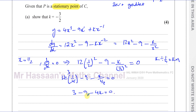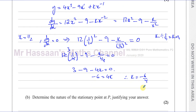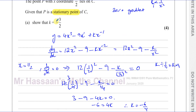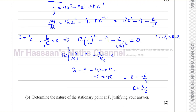So 3 minus 9 is minus 6, which equals 4k. Therefore k equals minus 6 over 4, which simplifies — dividing both by 2 — to k equals negative 3 over 2. And that's what we had to show. It says show that k equals negative 3 over 2, and we've shown exactly that.